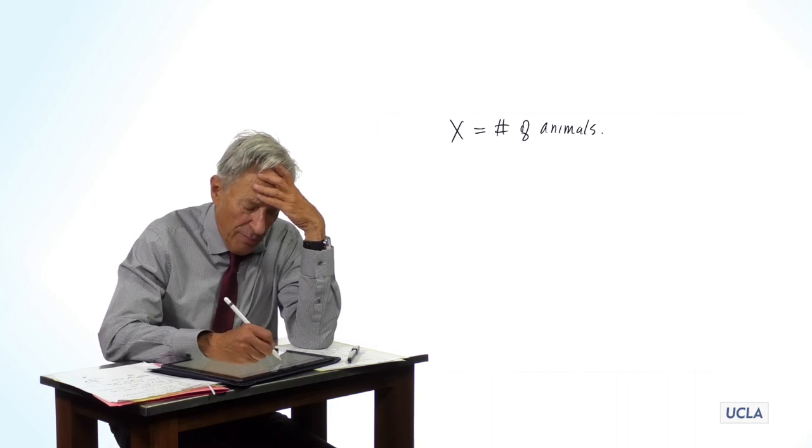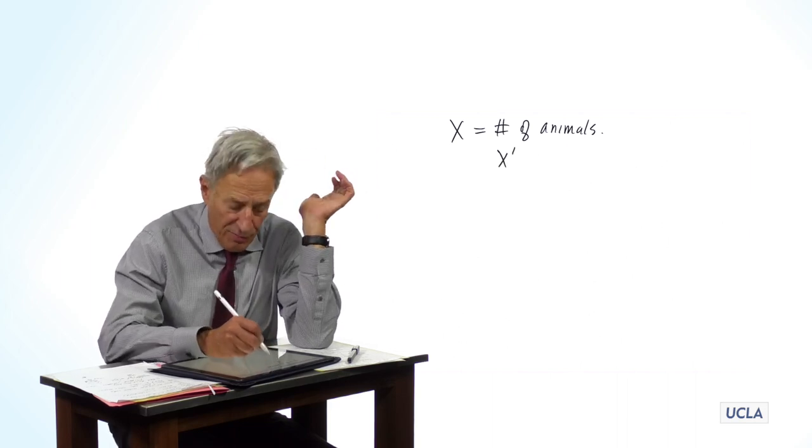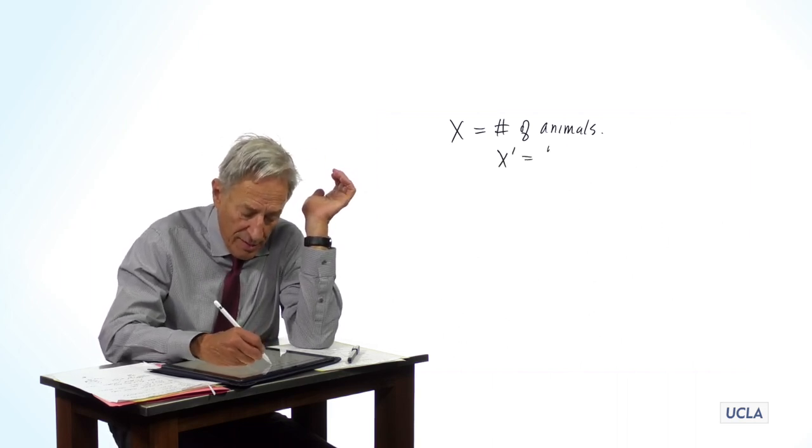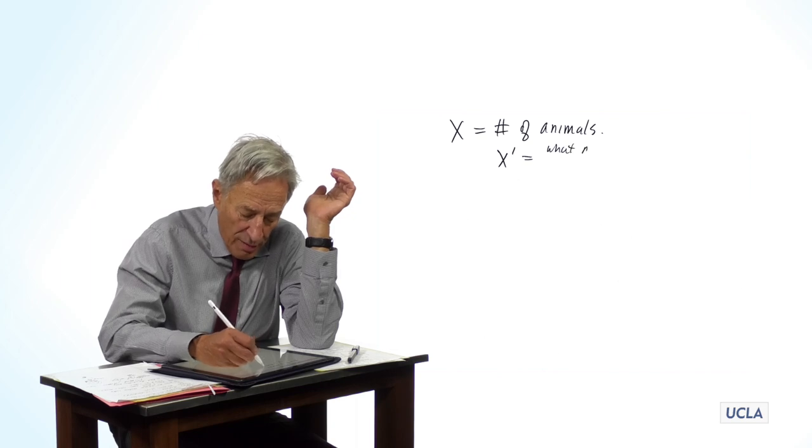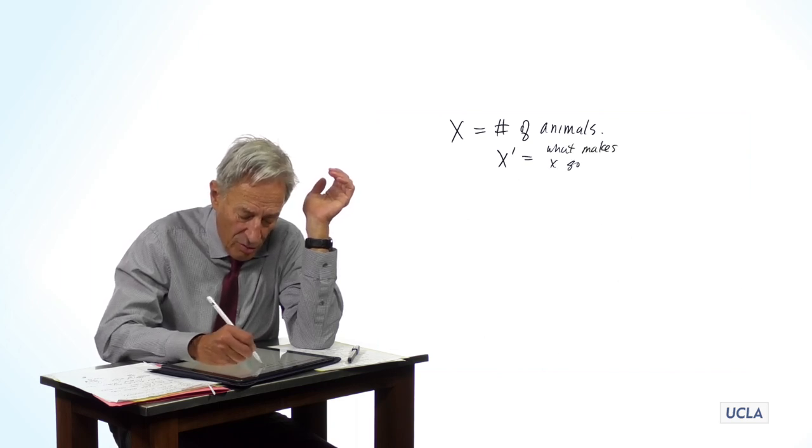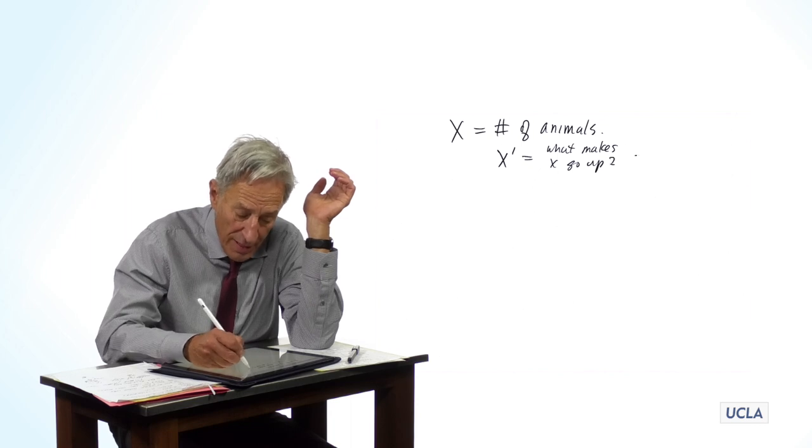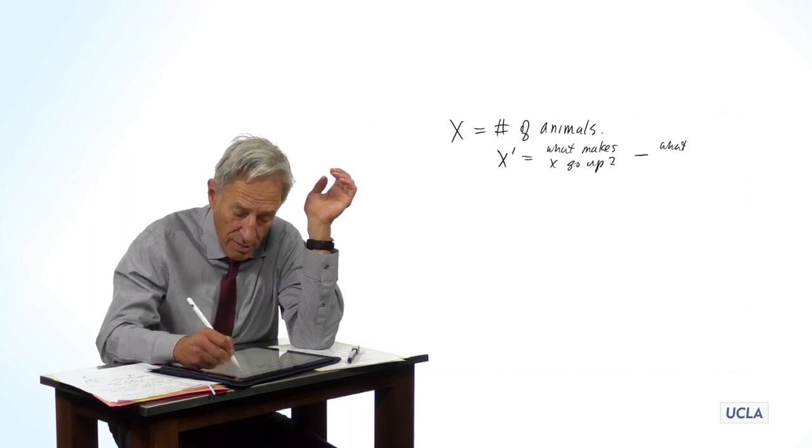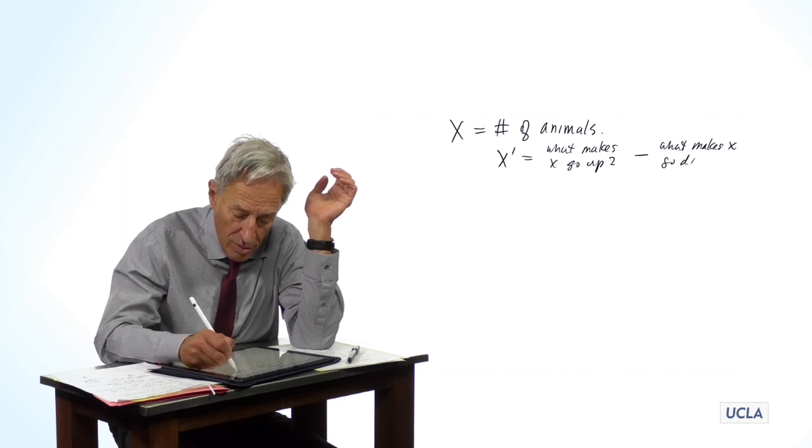So if we wanted to make a model of this, we would say X prime equals, and then it's of course what makes X go up minus what makes X go down.